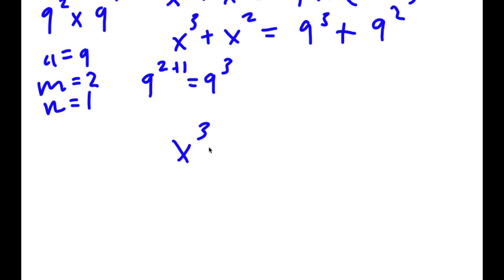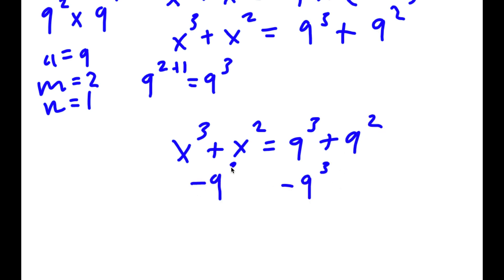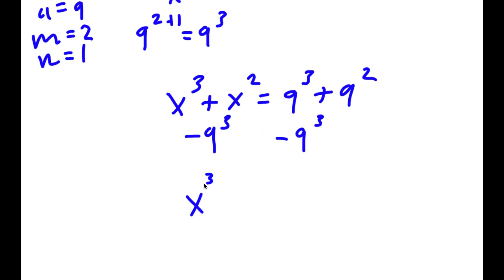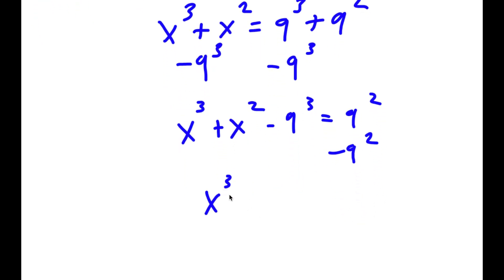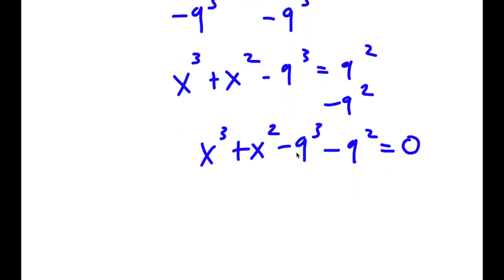Now I'm going to subtract 9 to the power of 3 on both sides, giving x to the power of 3 plus x squared minus 9 to the power of 3 is equal to 9 squared. I'm also going to subtract 9 squared on both sides, so I have x to the power of 3 plus x squared minus 9 to the power of 3 minus 9 squared equals 0. Rearranging, I get x to the power of 3 minus 9 to the power of 3 plus x squared minus 9 squared equals 0.